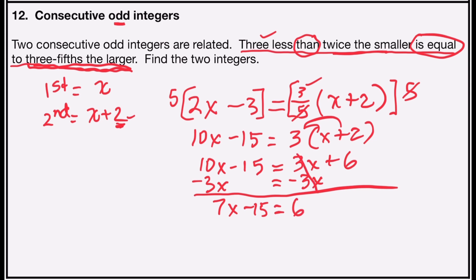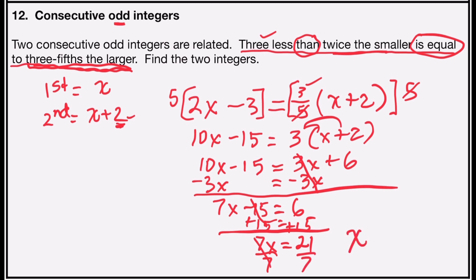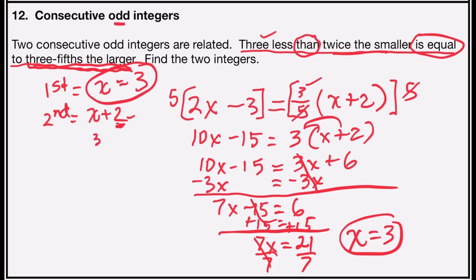10x minus 3x is 7x minus 15, equals 3x minus 3x which is zero, plus 6. Now I'm back to a two-step: add 15 to both sides and divide by 7. Negative 15 plus 15 is 0, so 7x equals 6 plus 15, which is 21. Divide both sides by 7: 7 divided by 7 is 1x, and 21 divided by 7 is 3. So my first integer x is 3. My second consecutive odd integer will be 3 plus 2, which is 5. My first consecutive odd integer is 3 and my next is 5.